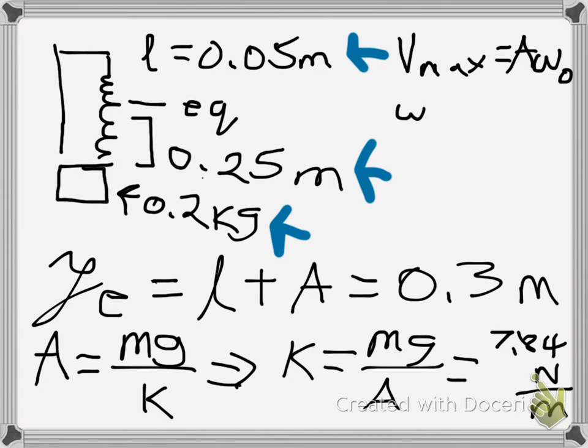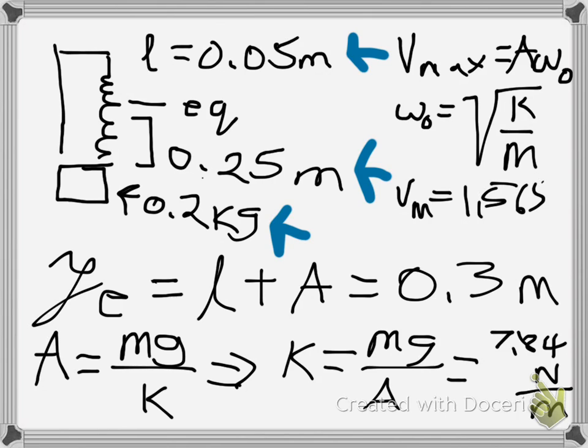So now, if we plug in all of those numbers, k and m, to get omega, and amplitude, then we would find that our v max is 1.565 meters per second. So you may want to confirm my math there and make sure that those numbers work out. But that is the basics of solving problems with a hanging spring mass.